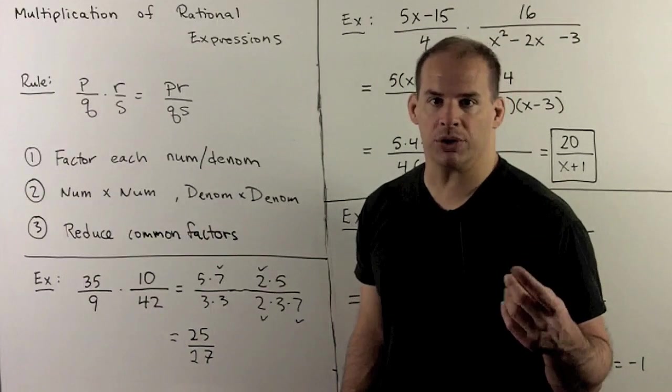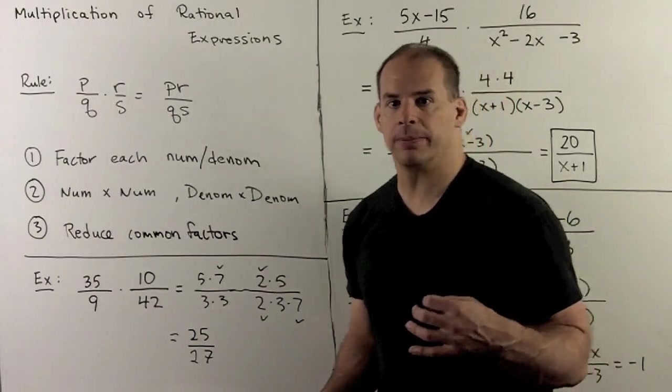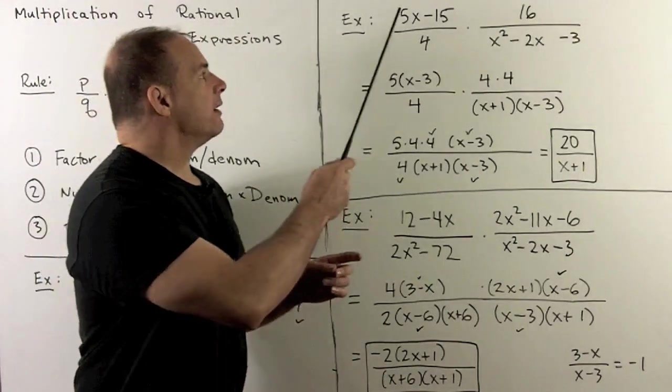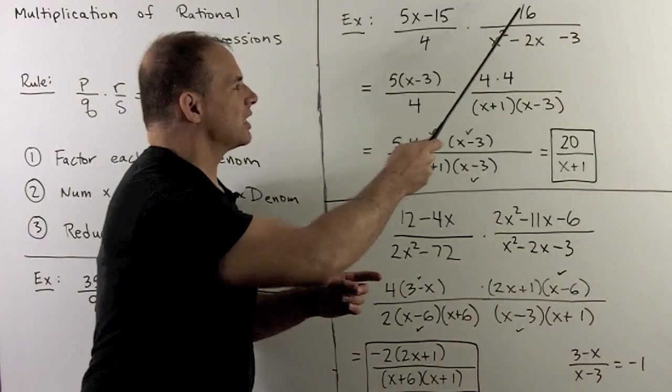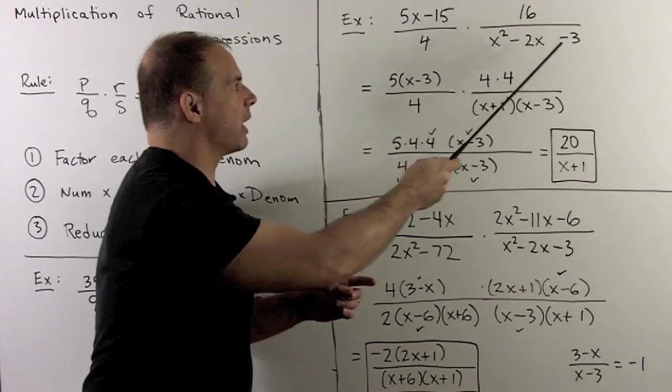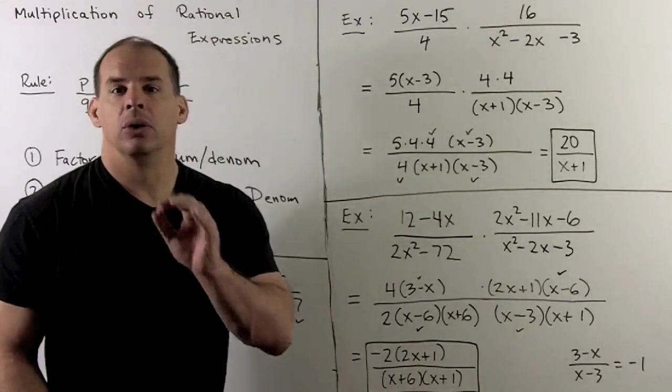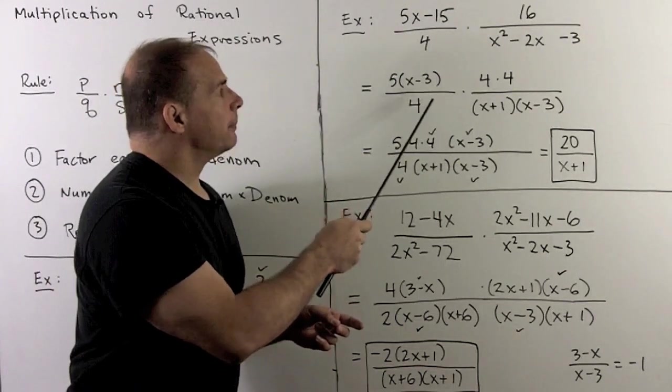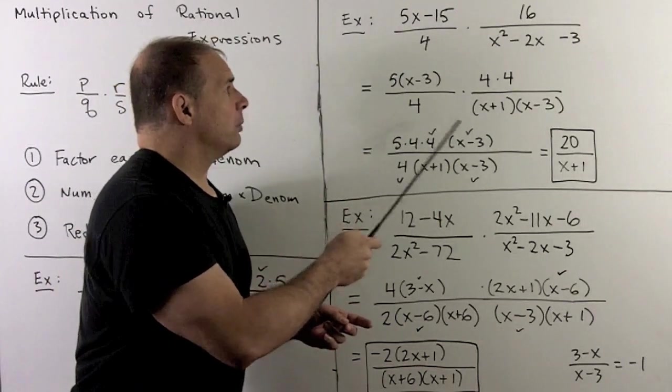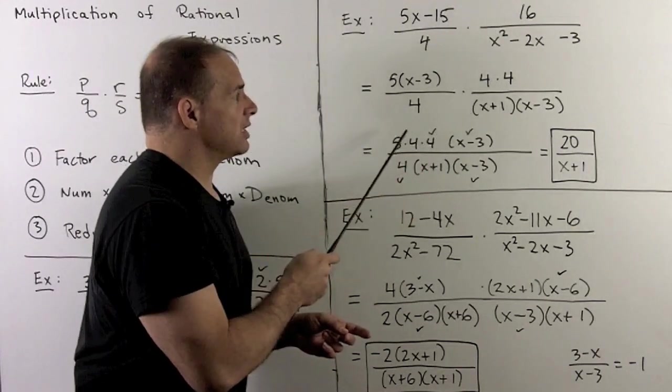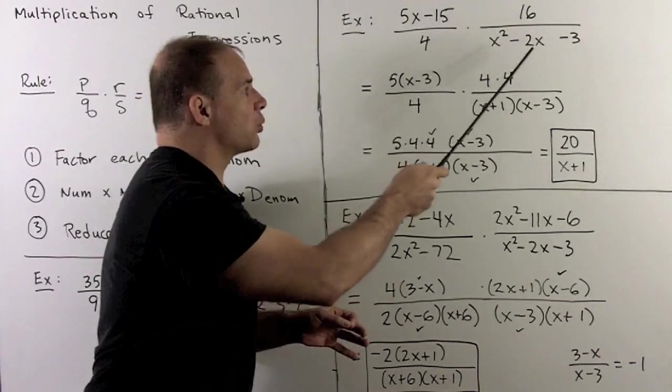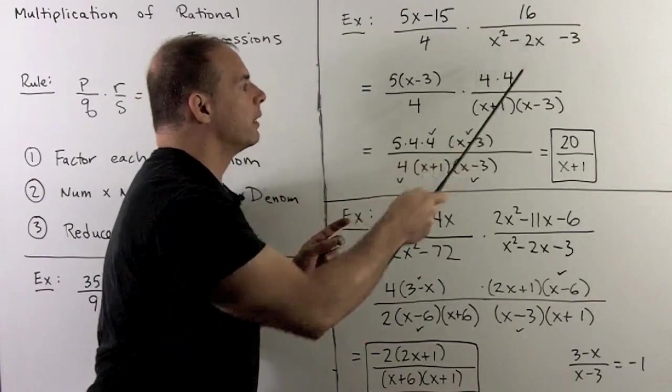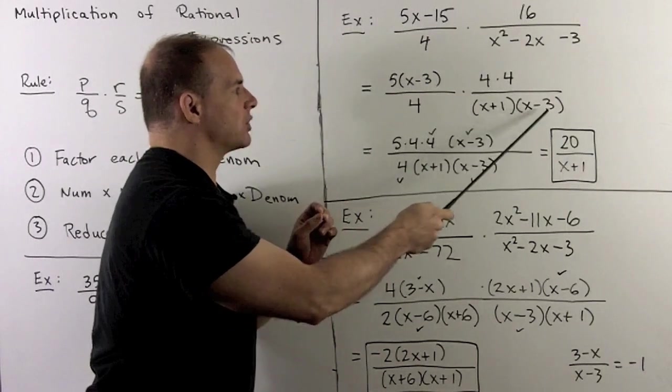Same idea when we work with polynomials and rational expressions. So, example. Let's try 5x minus 15 over 4 times 16 over x squared minus 2x minus 3. Factor each term completely, so this will go to 5 times x minus 3. 4 I can leave alone. 16 I notice is 4 times 4, so this will cancel nicely. Then I have to factor x squared minus 2x minus 3. The factorization here is x plus 1 times x minus 3.